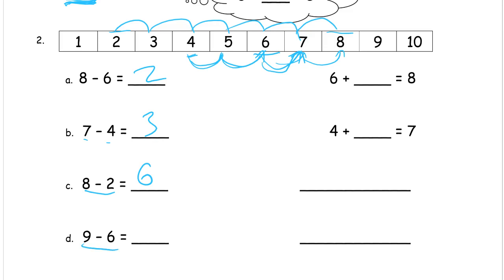And nine minus six. So if we start at the six here, we have to go one, two, three more to get to the nine. So that's three more — nine and six are three apart from each other.